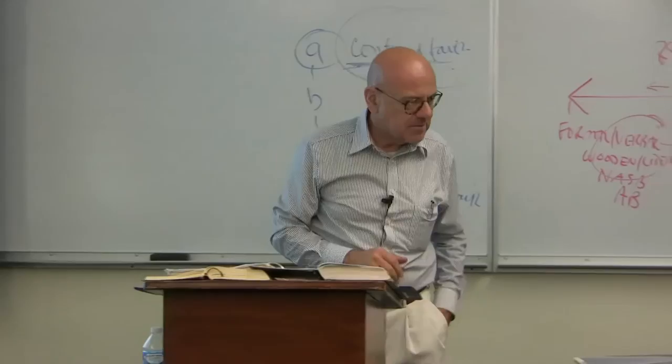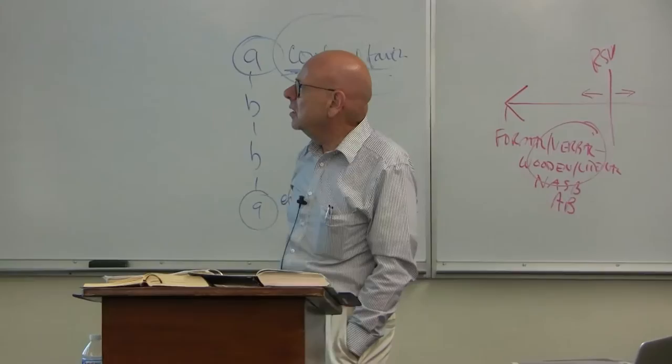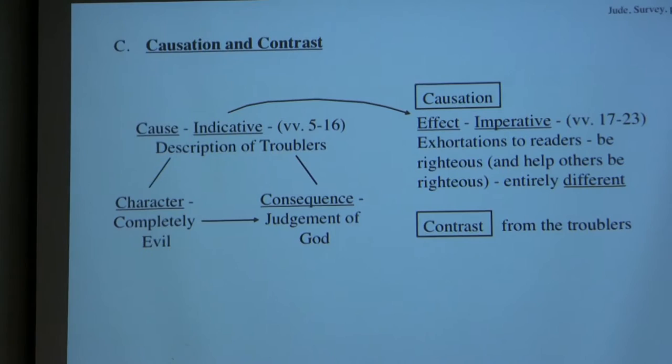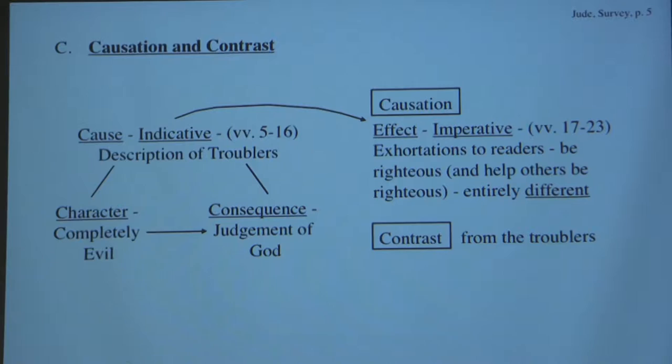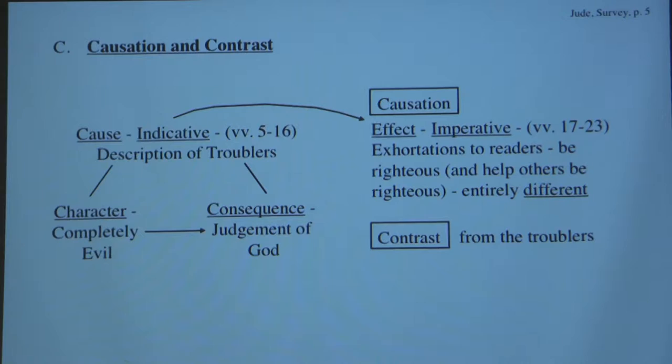Beyond that, we note that we may have a kind of causation with contrast in the body of the book, referring especially to verses 5 through 23. You notice a movement here from the indicative to the imperative — from what is to what therefore you ought to do.